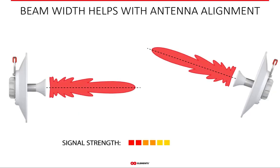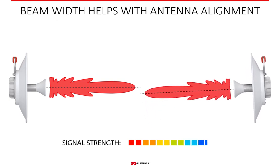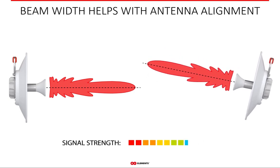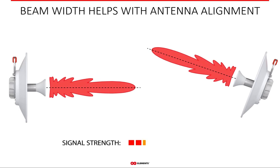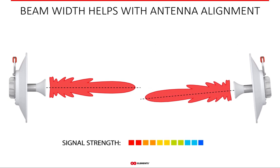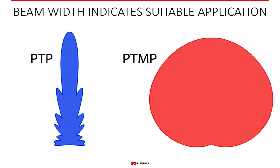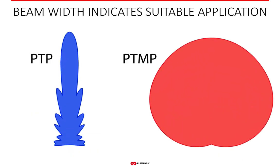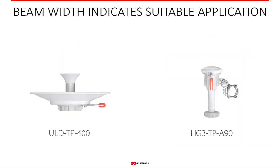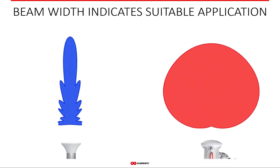Beam width is useful for antenna alignment. With a very narrow beam width antenna, one must be precise when aligning a point-to-point link because even small deviations can have a strong effect on link performance. Narrow beam width antennas should have a sturdy mounting able to withstand windy conditions, since even small misalignments can throw the whole link completely off. While there is no strictly point-to-point or multi-point antenna, beam width is a good indicator of what application an antenna might be better suited for. High-gain antennas are most used in point-to-point links to squeeze every possible bit of distance.